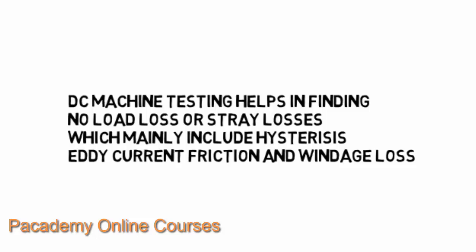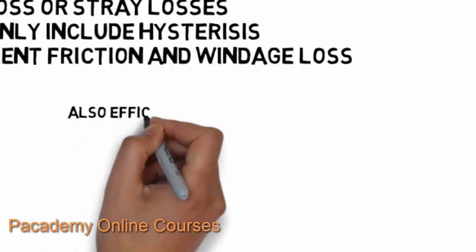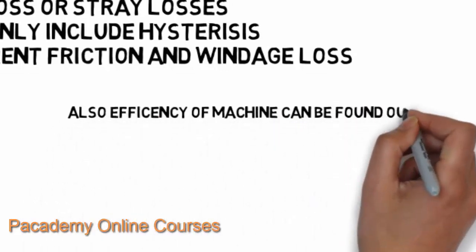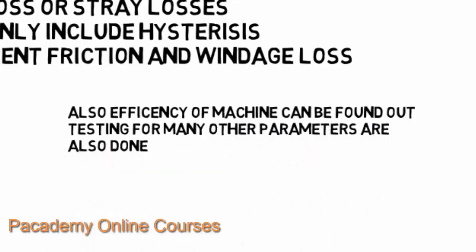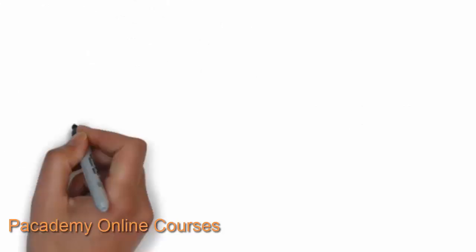These kinds of tests are applicable to both DC motors and DC generators. We will talk about the Swinburne's test, which is mainly used to test shunt motors and cumulatively compounded wound motors that have a constant flux, or where flux does not vary much with armature current. These tests also help in finding the efficiency of the machine.